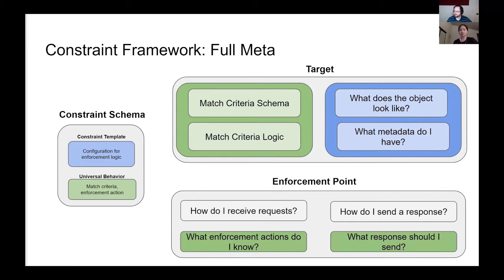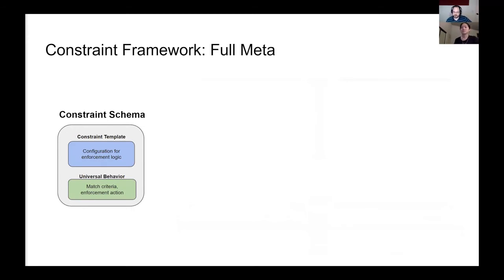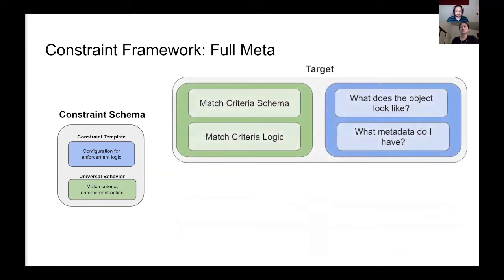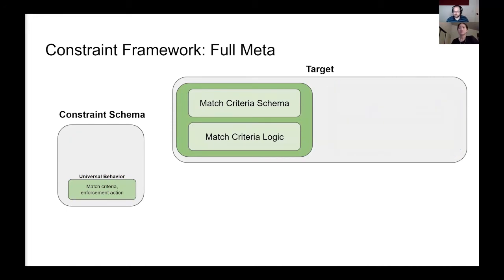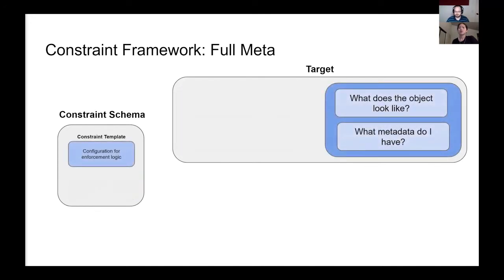There are a few critical behaviors the constraint/template abstraction relies on: some kind of match criteria schema and logic, enforcement actions to tell the system what to do when a constraint is unhappy, and an interface on which the enforcement logic can rely. A target abstracts the notion of a platform — what do objects look like, how are policies bound to them, what request metadata do I have? Targets give us our match criteria schema and logic, such as what a label selector looks like and how to test if it matches. Targets also provide constraint template authors with the information they need to evaluate a request, like what the object being validated looks like and what request metadata — such as requesting user — is available.